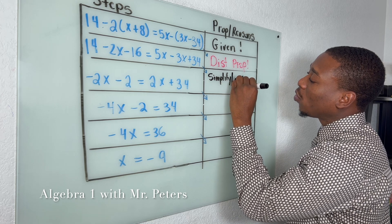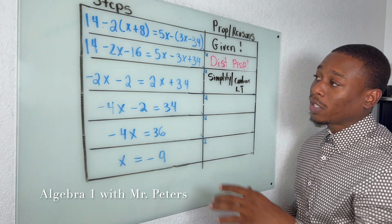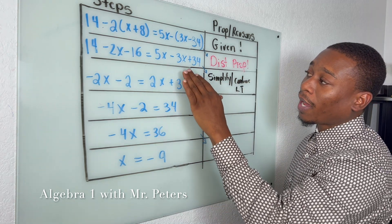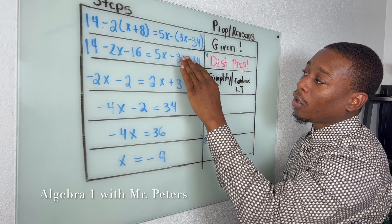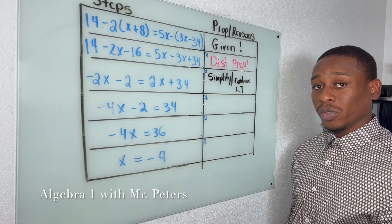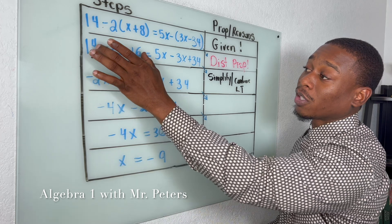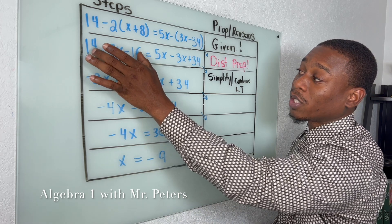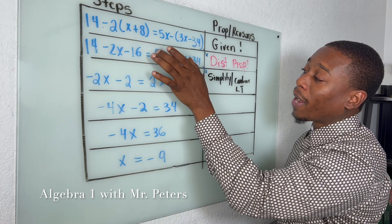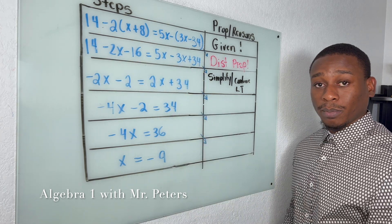The reason why we say 'simplify' is because we didn't apply subtraction on both sides or addition on both sides. What we did was just combine like terms here, combine like terms here, to get to this step.